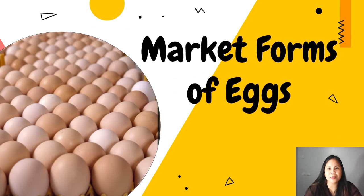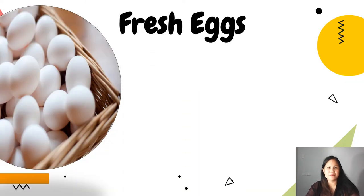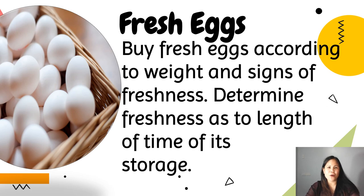For our last topic, these are the market forms of eggs. There are four market forms: fresh, dried, frozen, and preserved. Eggs are sold in different market forms and producers may sell their eggs directly from the farm. Fresh eggs — buy fresh eggs according to weight and signs of freshness, and determine freshness as to length of time of storage. Fresh eggs or shell eggs may be purchased individually, by the dozen, or in trays with 36 pieces. We can use gross examination or the shaking method when buying fresh eggs.